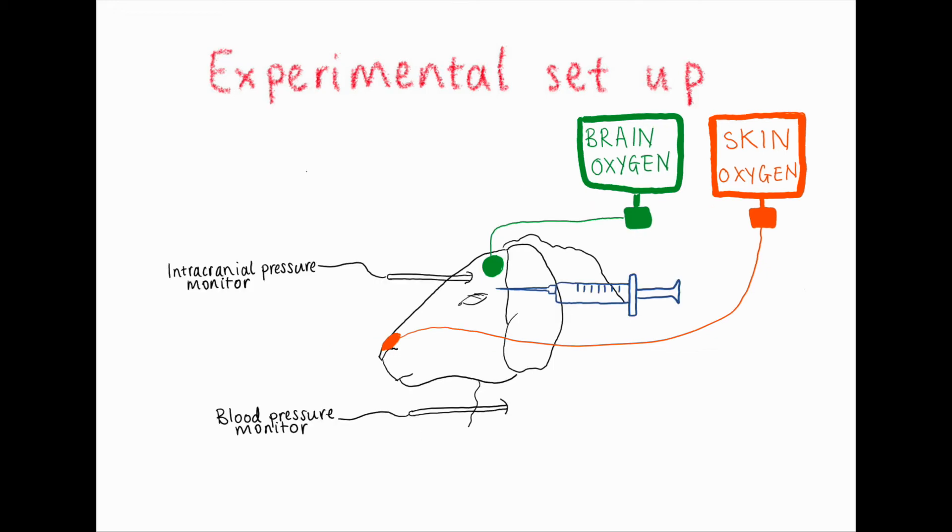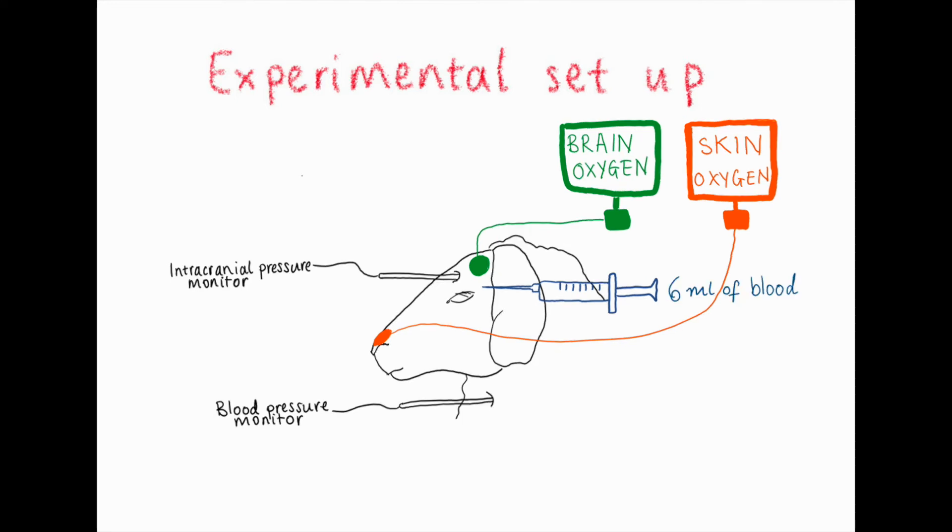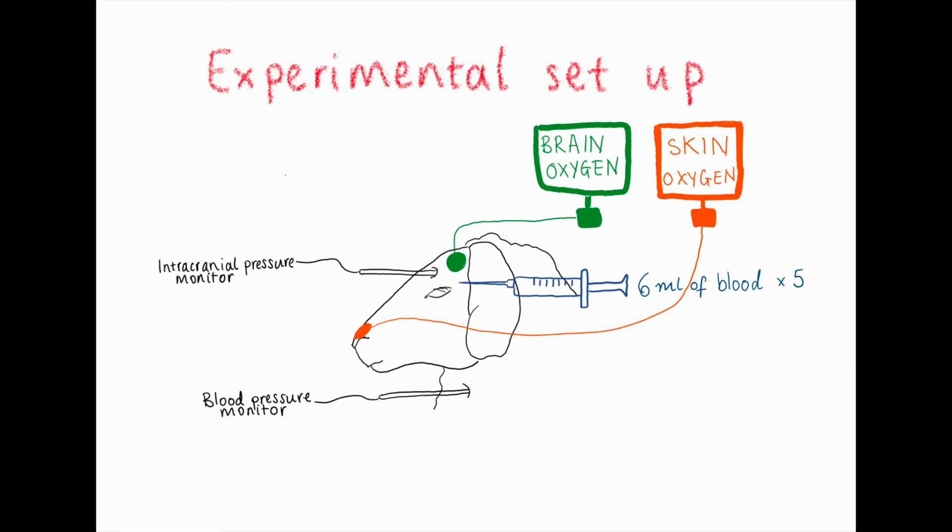The injury to the brain was produced by drilling a hole in the skull and injecting blood directly into the base of the anterior cranial vault for six minutes. This causes a marked increase in intracranial pressure and reduction in cerebral perfusion pressure. This injection was repeated five times in each sheep.